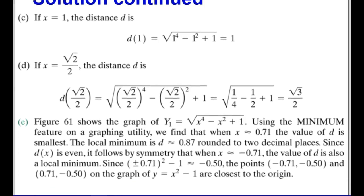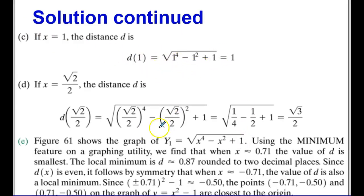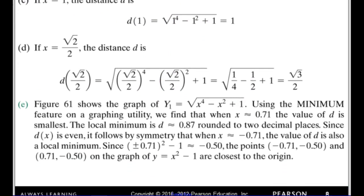For part D, if x is the square root of 2 over 2, I do the same thing — plug that into x to the 4th minus x squared plus 1 — and I end up with the square root of 3 over 2. Then I can also use a graph to help find the minimum distance. I graph this distance equation because I want to minimize the distance — to find the point on the parabola closest to the origin.